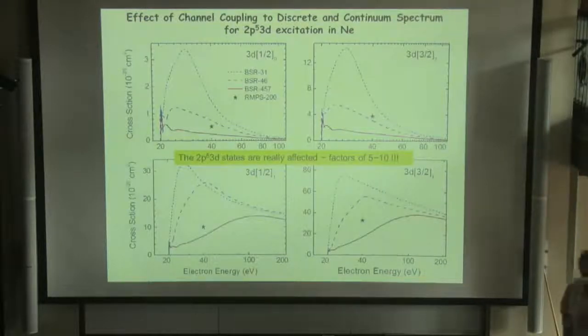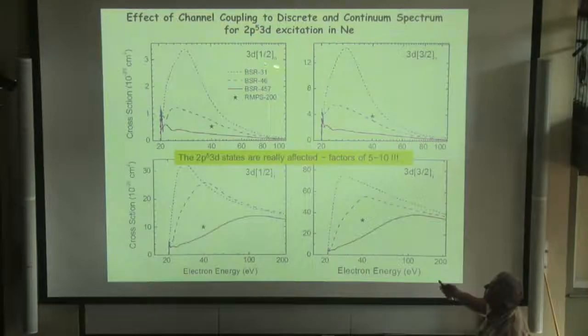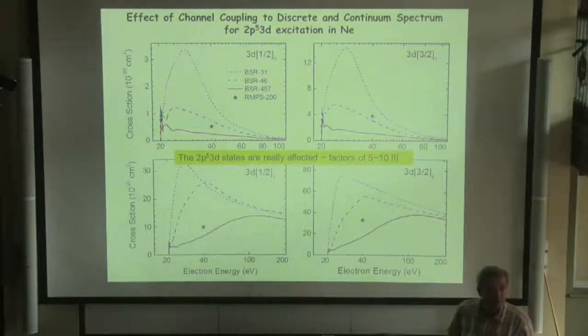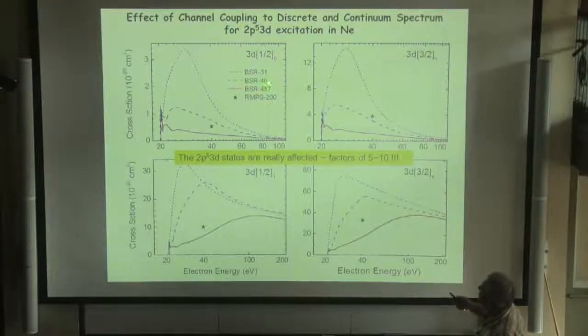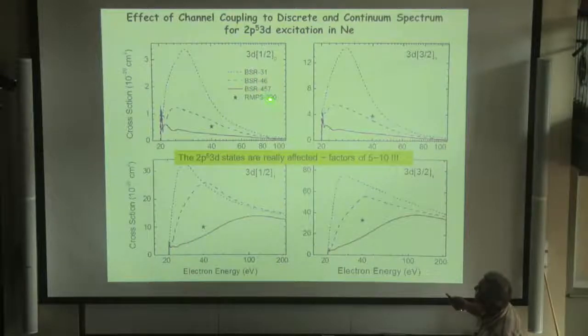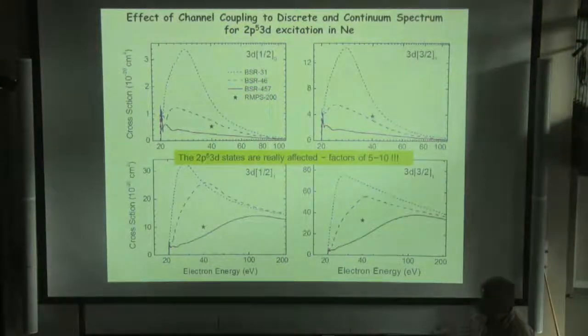Okay, even more drastically, we obtain the inclusion of target continuum for excitation to 3D states - here, a factor of 5 to 10. And here, for example, we can see how, because BSR-46 is just inclusion of all bound states, and BSR-450 is inclusion of continuum pseudo-states.